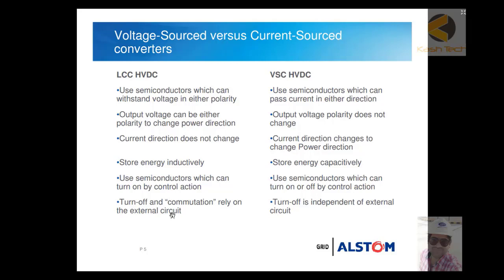In LCC, to change the current direction you must change the polarity of the voltage itself — it is not possible to change the current direction independently. Another difference: LCCs store energy inductively using reactors connected to the line, whereas VSCs store energy capacitively using capacitors. LCCs use semiconductors that can only be turned on by control action, whereas VSC HVDCs use semiconductors that can be both turned on and off by control action. In LCC, turn-off and commutation rely on the external circuit, whereas VSC turn-off is independent of the external circuit.